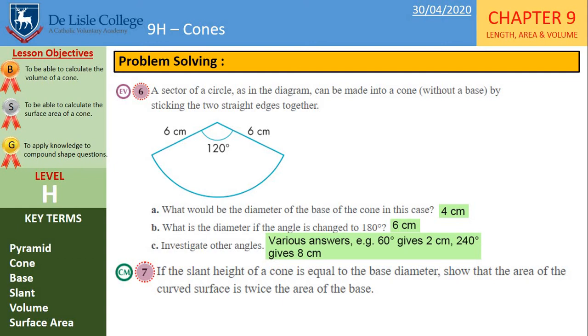So question 7. Well done if you got this. So we've got the slant height of the cone is equal to the base diameter and show that the area of the curved surface is twice the area of the base. Well, since the base is a circle, let's look at this in terms of the radius because we know the area of a circle is pi r squared. So if we use r to represent the radius, the diameter is 2r. The slant height is equal to the diameter, so the slant height is also 2r.